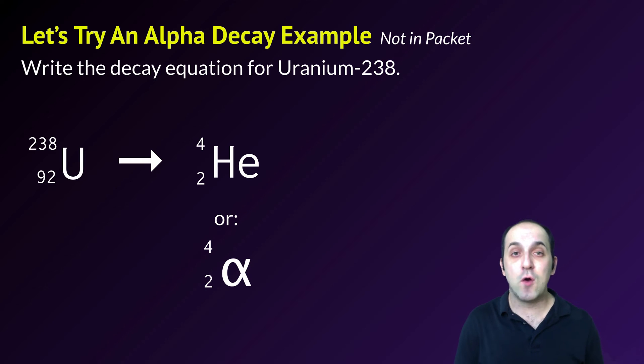Now that I know uranium-238 is going to produce this alpha particle, I need to figure out what the daughter isotope will look like. I'm just going to use conservation of mass and do some subtraction. 238 minus 4 is 234, and 92 minus 2 is 90. Be careful - uranium had an atomic number of 92, it does not have an atomic number of 90. I need to go to my periodic table, find atomic number 90 and write down that symbol, which is thorium. This is the complete decay equation for uranium-238.